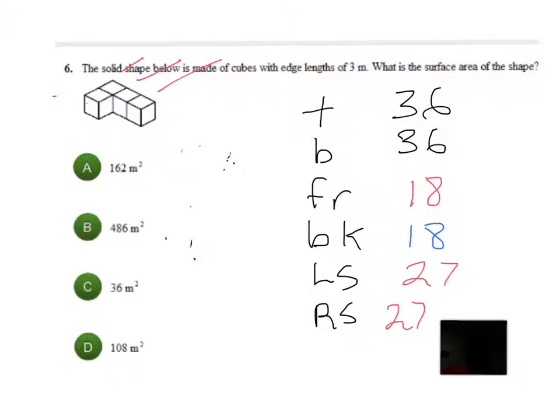I just grab my calculator and I do 36 times 2 plus 18 times 2 plus 27 times 2 equals 162. So my surface area is 162 meters squared.